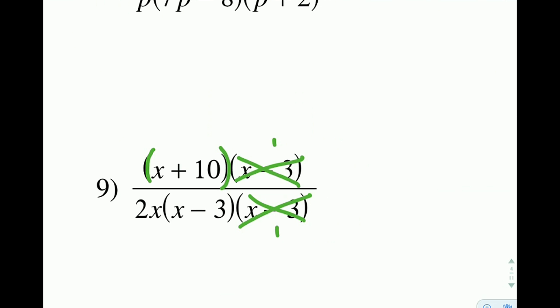So our final answer here is actually going to be x plus 10 over 2x times x minus 3. And that's where we're going to stop. Again, we still need to do our excluded values.